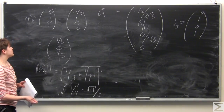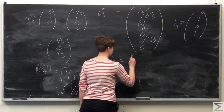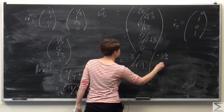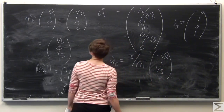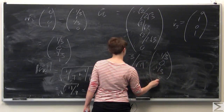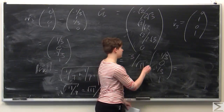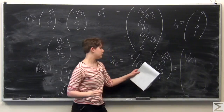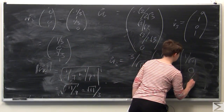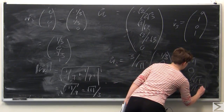To find u3, we multiply the reciprocal 3 over root 11 times w3, which is (1 third, 0, negative 1 third, 1). So 3 over root 11 times 1 third is 1 over root 11; 3 over root 11 times 0 is 0; 3 over root 11 times negative 1 third is negative 1 over root 11; and 3 over root 11 times 1 is 3 over root 11. So u3 equals (1 over root 11, 0, negative 1 over root 11, 3 over root 11), and we've now found u3.